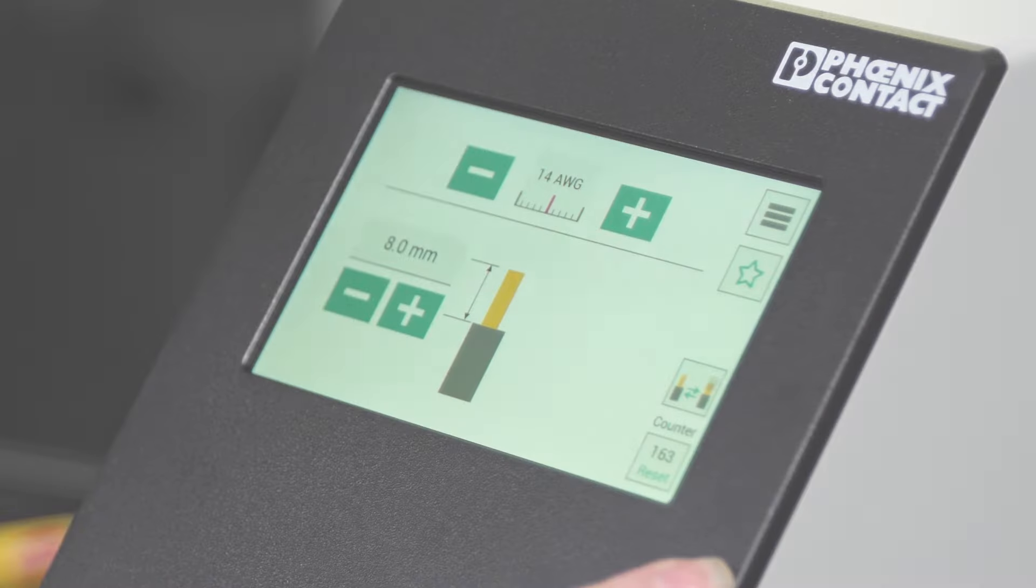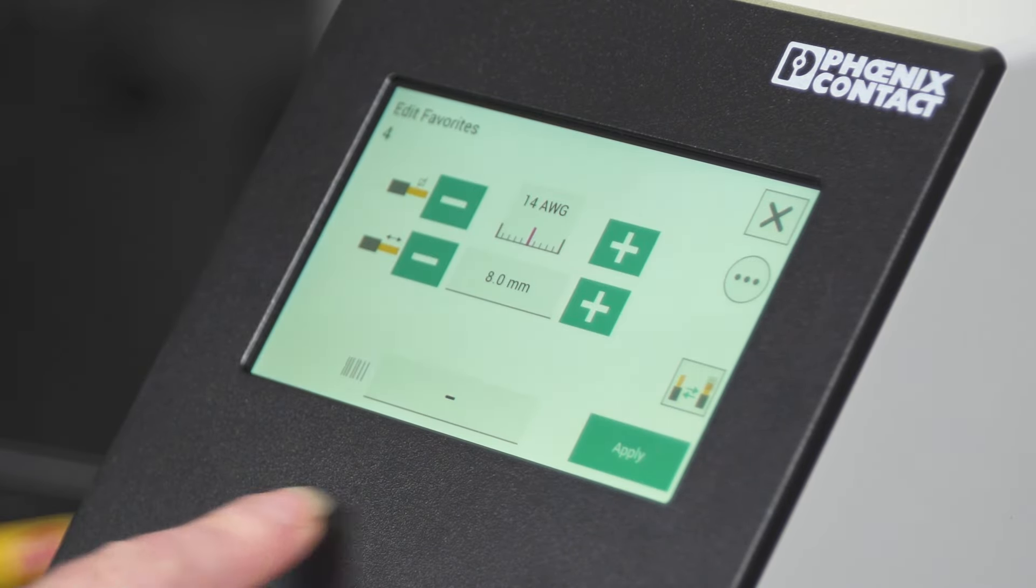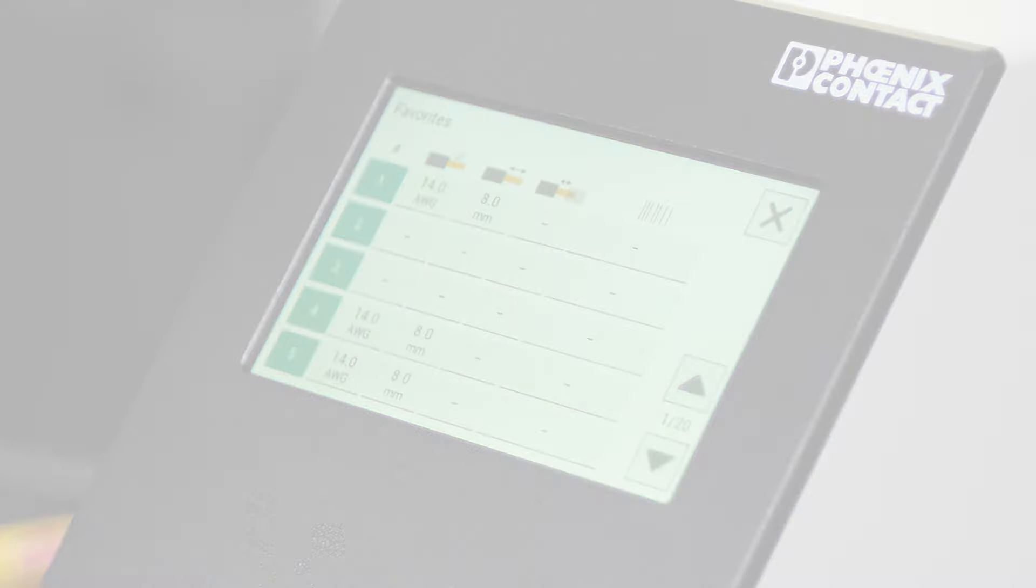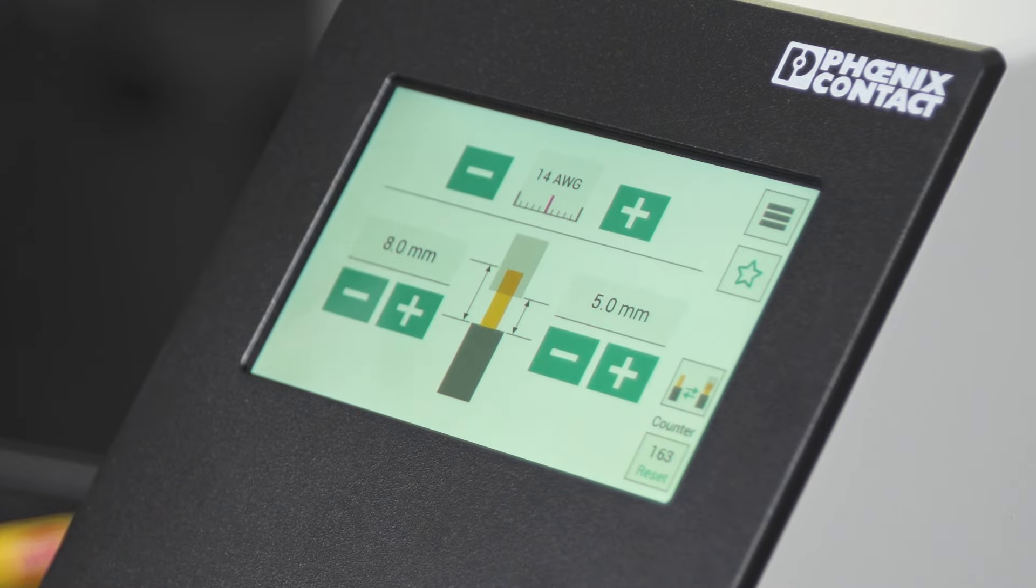Once favorites are entered, they can be accessed by touching on the star and then selecting the desired job number. This icon here enables you to quickly switch between full or partial strip. Now it is partial, full, partial.